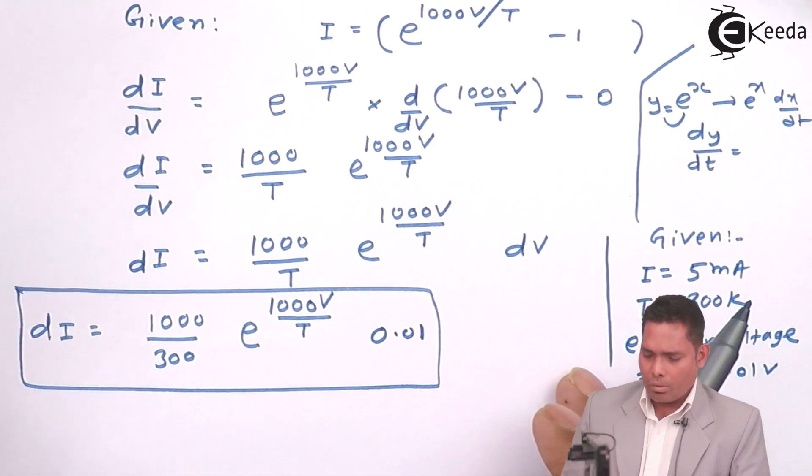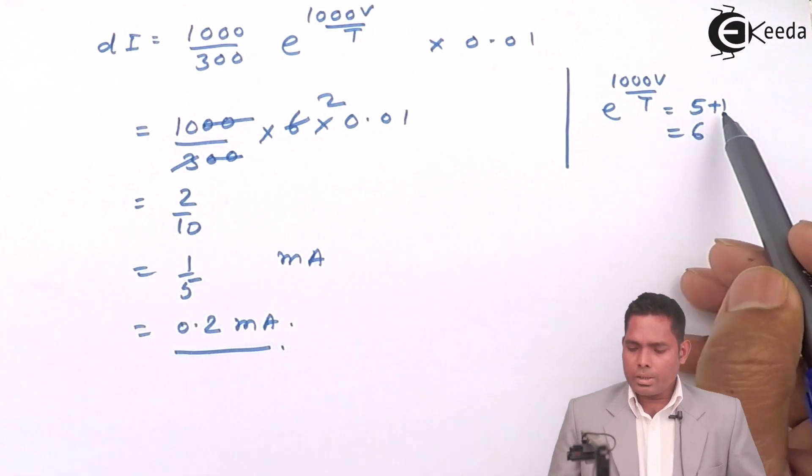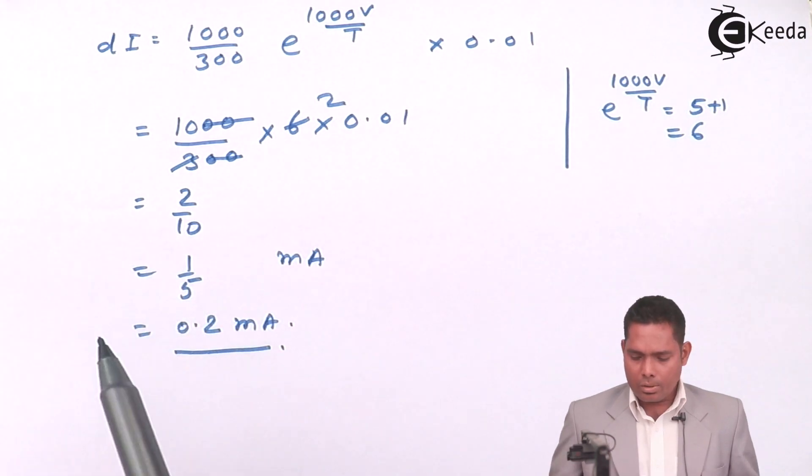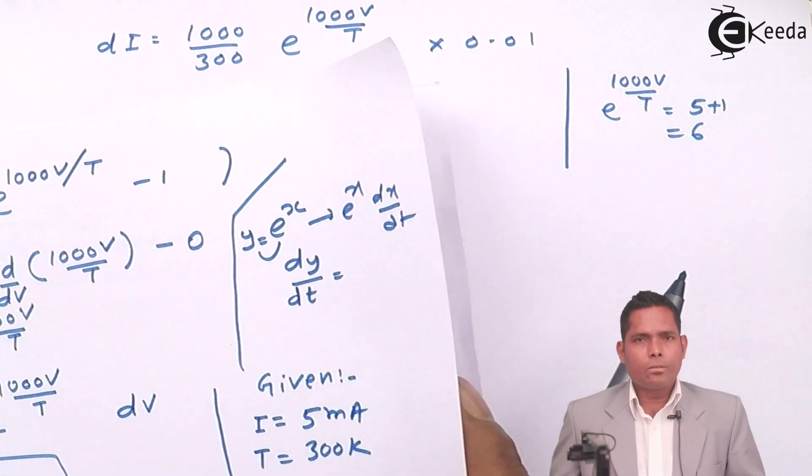So this part you can solve to get 6 - V and T values are given to you and you will get 6 over there. Thank you.